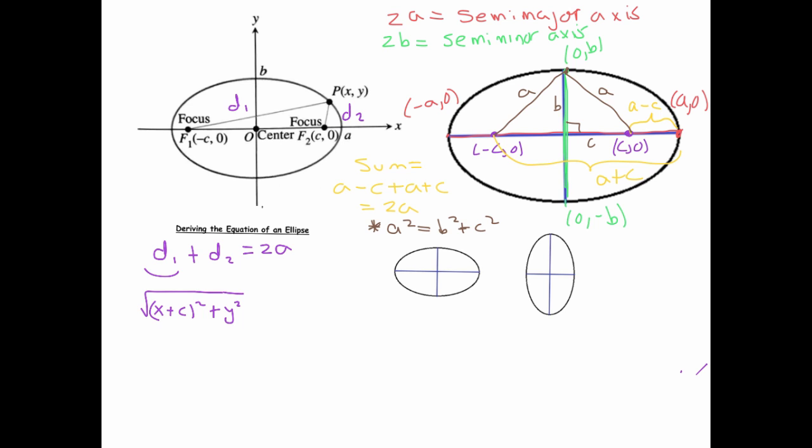It's the difference between the x coordinates squared plus the difference between the y coordinates squared. d2 would be, using the same idea, the square root of (x minus c) squared plus y squared, and we know that's supposed to equal 2a.